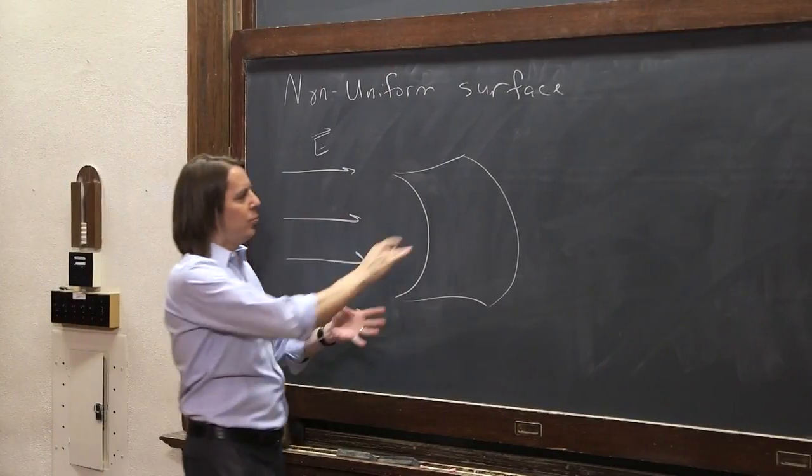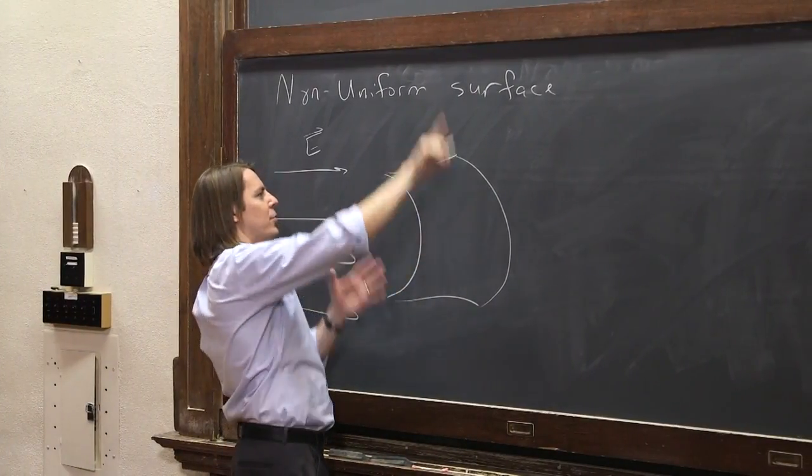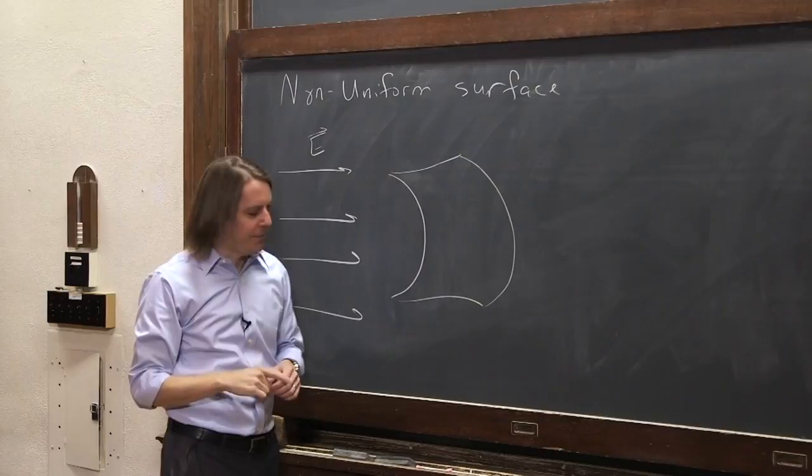This gets a little bit tricky because what is A? The A vector could point all different directions. You've got to know how to figure out what A is.